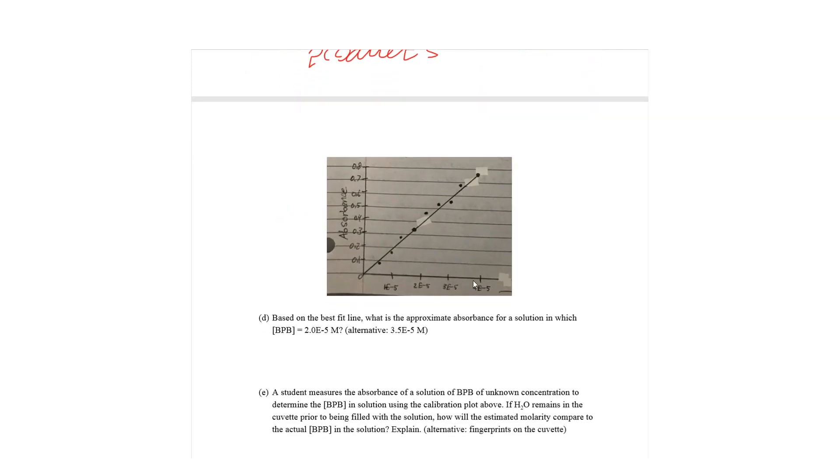Next question. So, this is based on the best fit line. What is the approximate absorbance for a solution in which the concentration of BPB is 2.0 times 10 to the negative 5th molar? So, this is just looking at the best fit line and extrapolating from data. So, when you see BPB is 2 times 10 to the negative 5th molar, we can line that up with somewhere in the absorbance axis. And we see the absorbance is approximately 0.37.